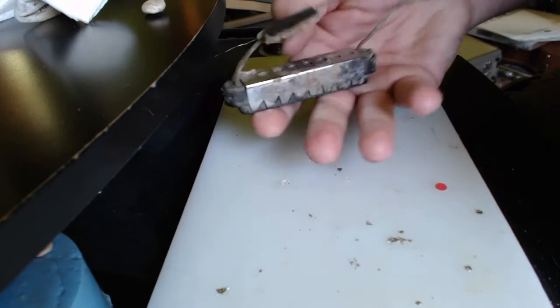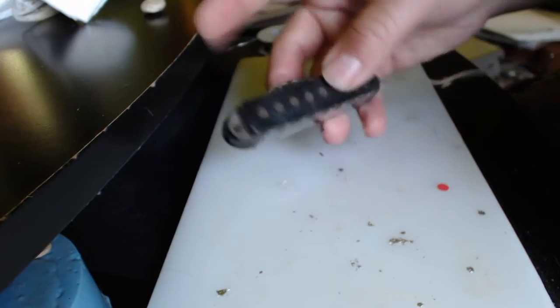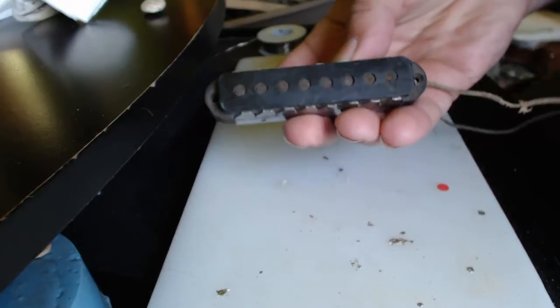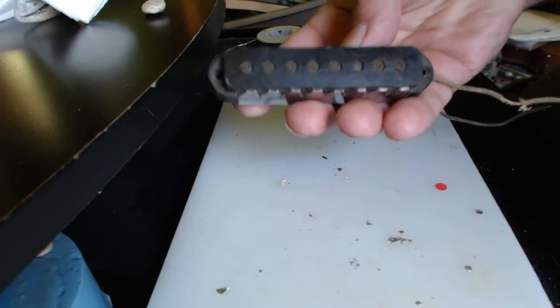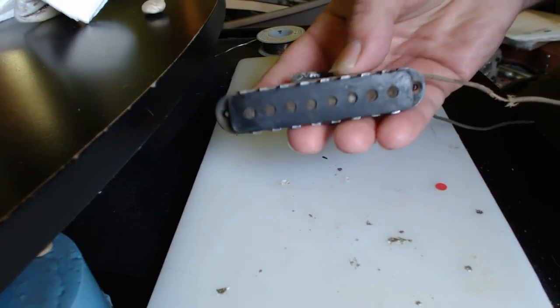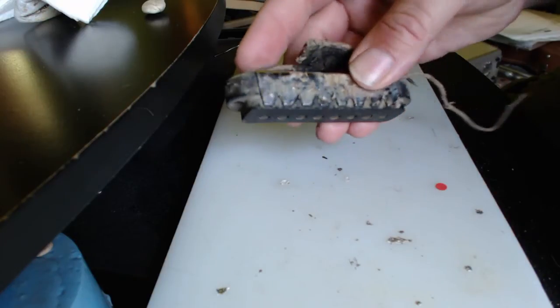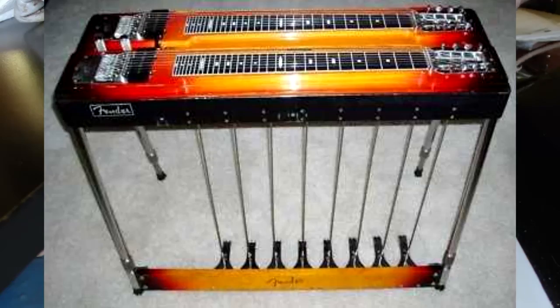All right, so today we're working on a Fender 8-string pedal steel guitar. This came out of a 1963 Fender 1000, which was a double neck pedal steel. It was a transitional year.